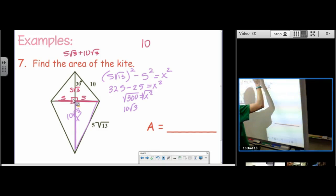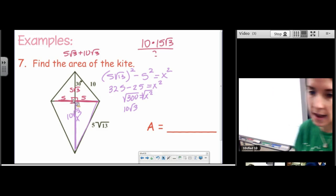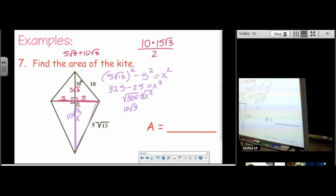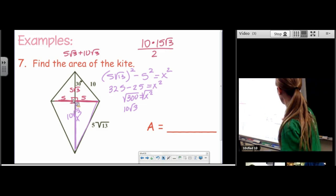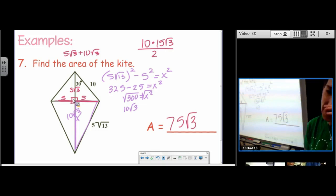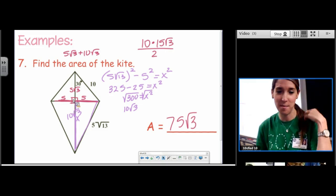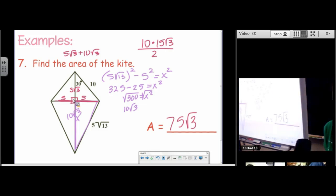I'm multiplying here. Diagonal 1 times diagonal 2 divided by 2. Final answer. True, it is saying that we could just find the area of each triangle and add them all up. Sure. Sure you could. Okay. Yes. Yes. Yes. Yes.